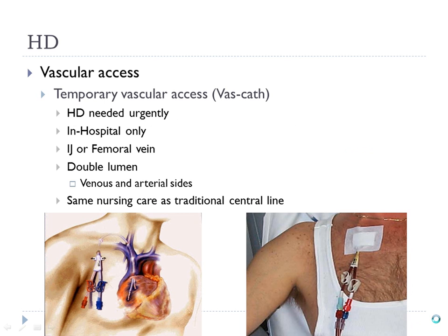A VASCAP is a tunneled central line usually placed in the internal jugular. It may look like it's subclavian because the insertion site is below the clavicle, but the VASCAP actually goes up over the clavicle and into the internal jugular vein.